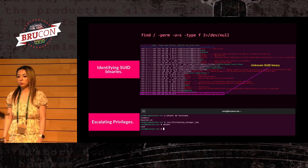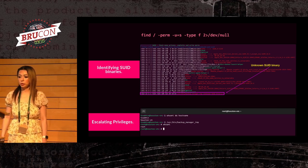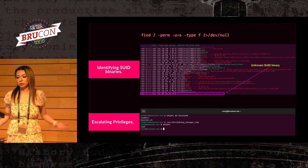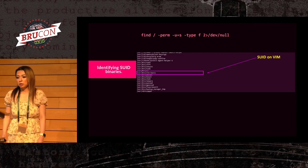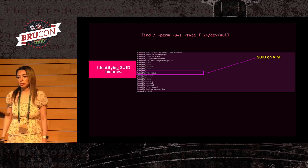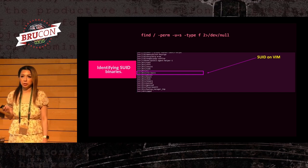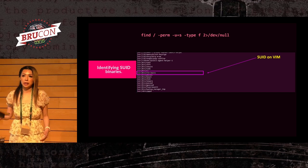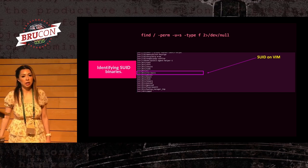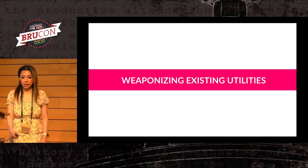Here's a typical example: looking for a random binary running as setUID, running it, and getting root access — very standard. And in some cases, based on the type of binary — in this case a text editor — I could run commands. If it has the setUID bit on, I could run commands with elevated access.